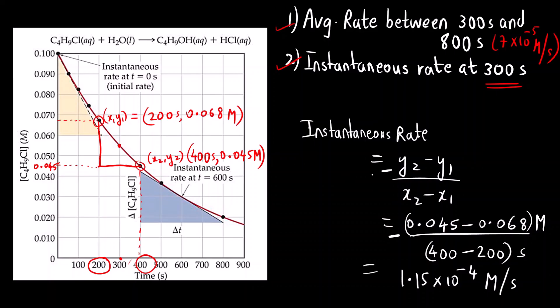In this way, we can calculate the instantaneous rate by calculating the slope. I hope you have understood how to find out the average rate and instantaneous rate using the graph. Thank you.